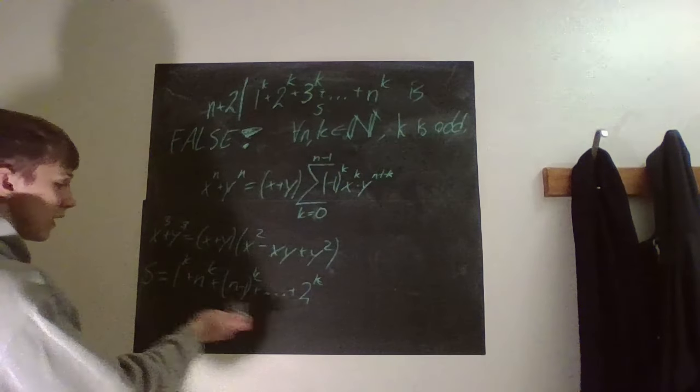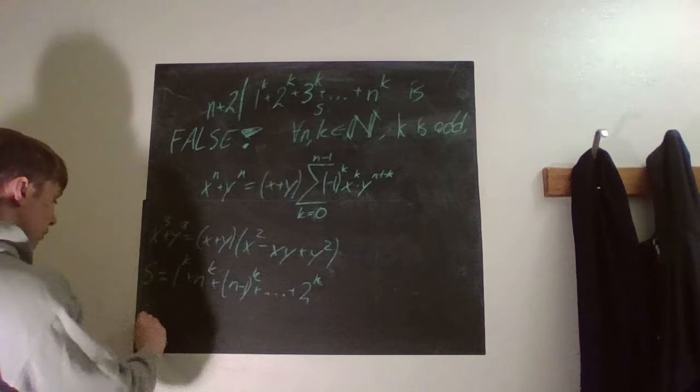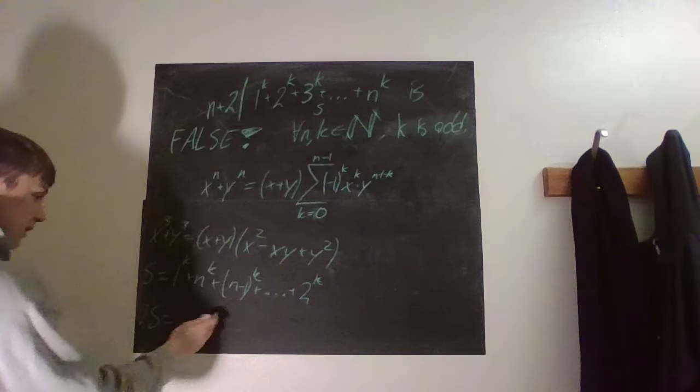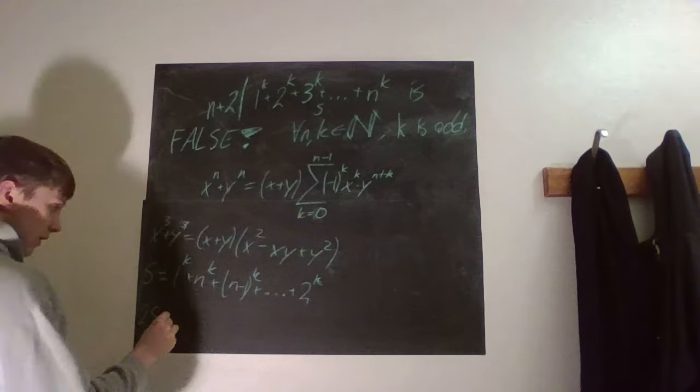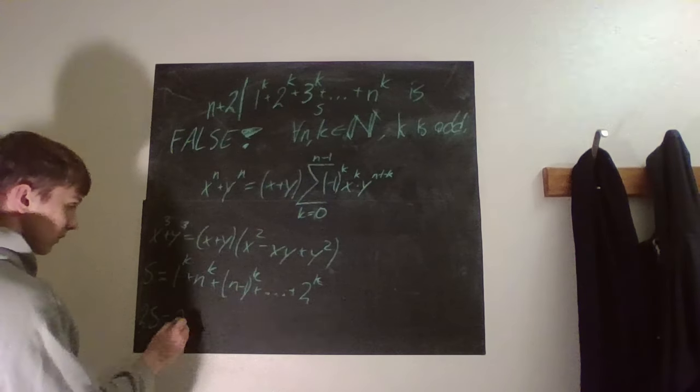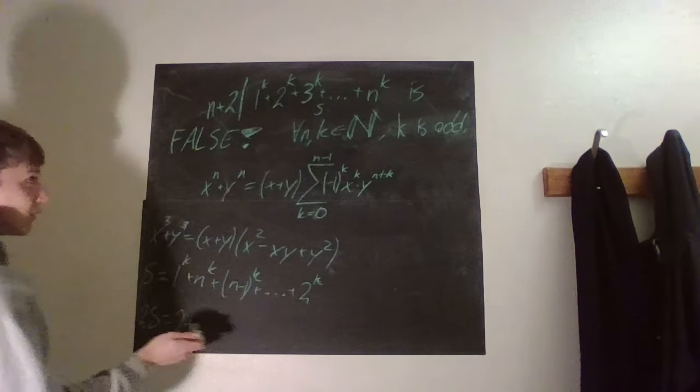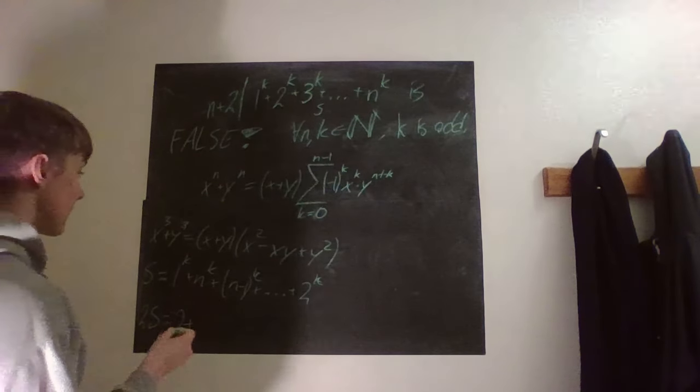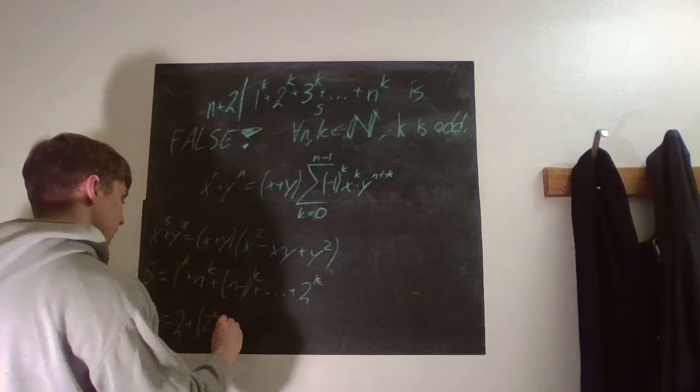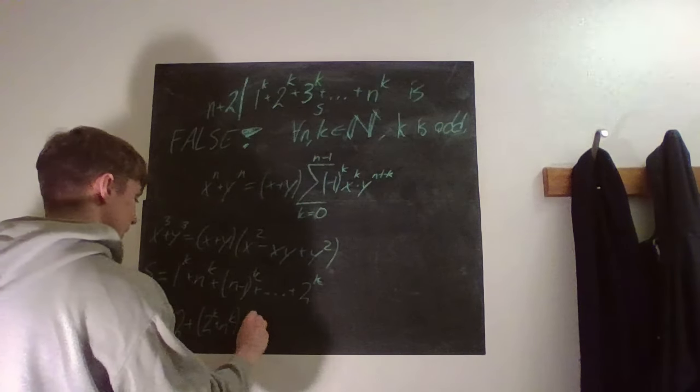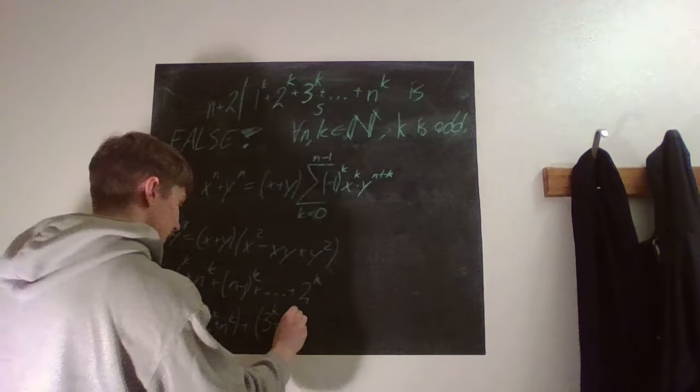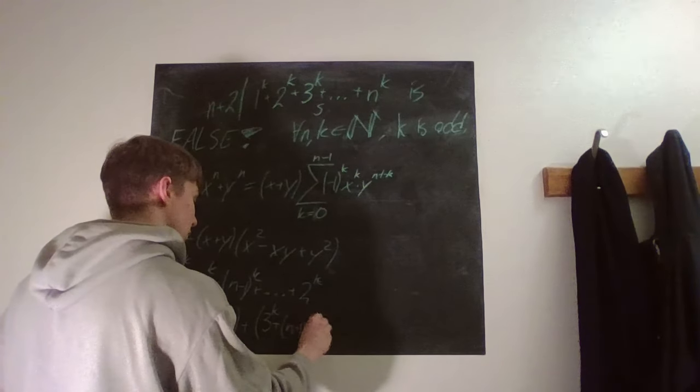And then because we haven't changed anything, we can just write that 2s is equal to our normal s plus this way of writing s. So then we just have, well, 1 to the power of k is just 1, so just a 2. And then we kind of think about like grouping these together. So what do we have then? We have 2 to the power of k plus n to the power of k, and then we have 3 to the power of k and we have n minus 1 to the power of k.